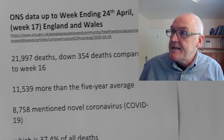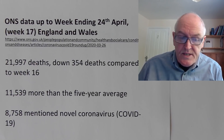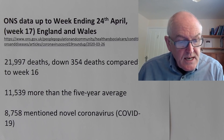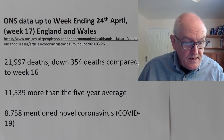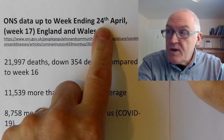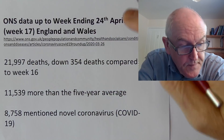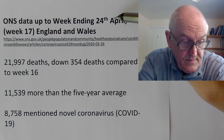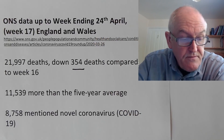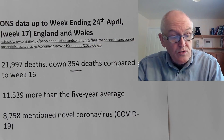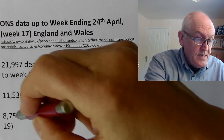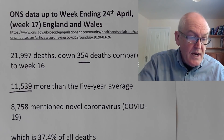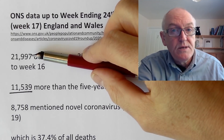Looking at Office for National Statistics data up to the week ending the 24th of April — week 17 — the data collected is quite accurate so it's worth looking at. There were 21,997 deaths in that week in the UK, which was down by 354 deaths compared to the week before. This is 11,500 more than the five-year average, so we have a significant excess of deaths at the moment compared to what we would normally expect at this time of year.